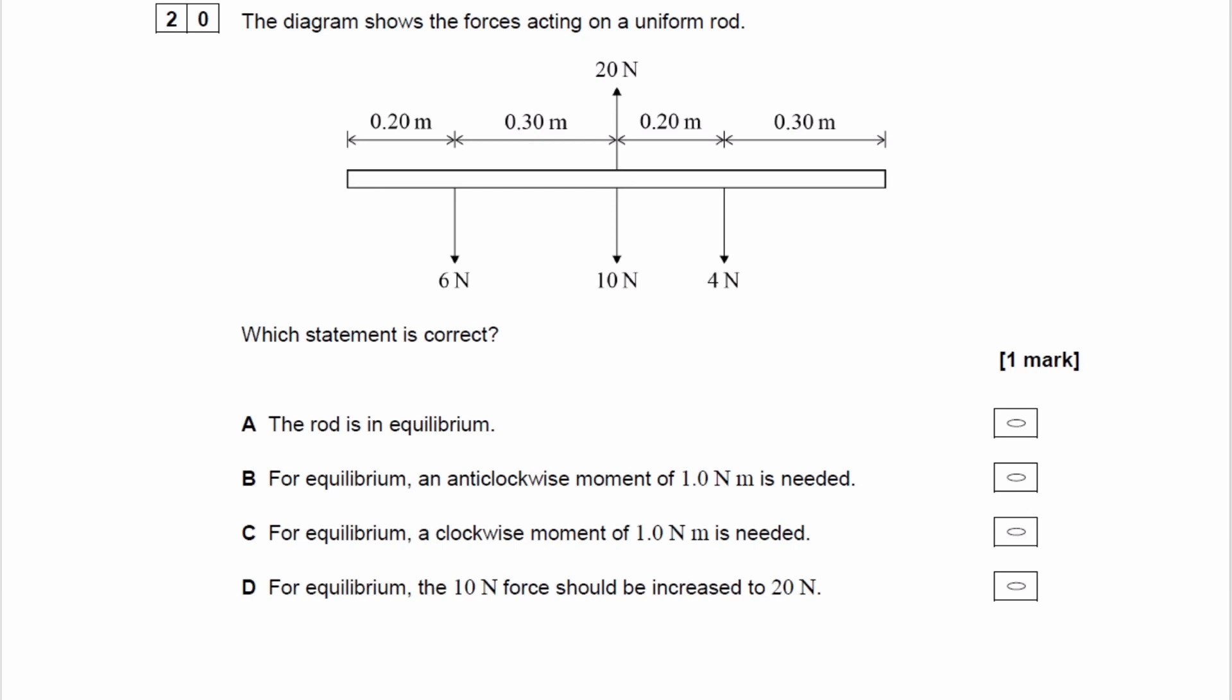But that's not the only condition for equilibrium. The other condition is that there must be no resultant moment about any point. So we need to work out moments in order to figure out if the rod is in equilibrium.